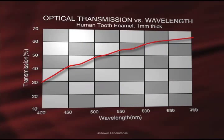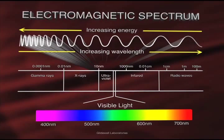The optical transmission of tooth enamel, measured with a spectrophotometer, shows an optical transmission of approximately 53 percent at a visible wavelength of 550 nanometers, with a higher transmission of approximately 63 percent at 700 nanometers in the yellow-orange part of the electromagnetic spectrum. The visible part of the electromagnetic spectrum ranges from 400 nanometers to 700 nanometers, which is only a small part of the electromagnetic spectrum.